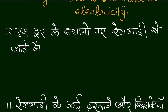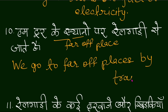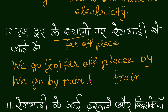Door ke sthaanon par — for 'far off places': 'We go to far off places by train.' You can also omit 'to': 'We go far off places by train.' Alternatively: 'We go by train to distant places.'